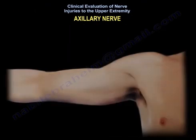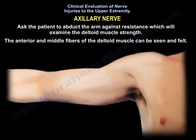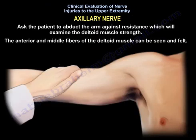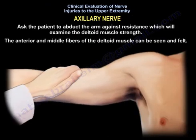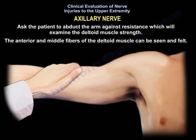How do you examine for axillary nerve injury? Ask the patient to abduct the arm against resistance, which will examine the deltoid muscle strength. The anterior and middle fibers of the deltoid muscle can be seen and felt.